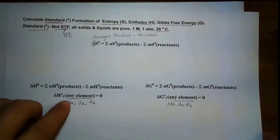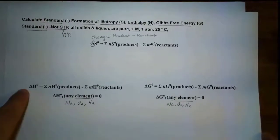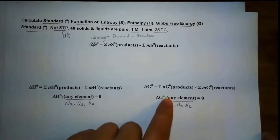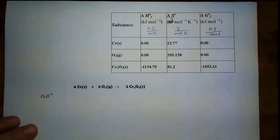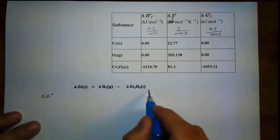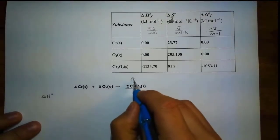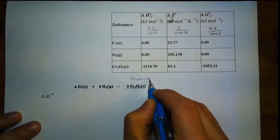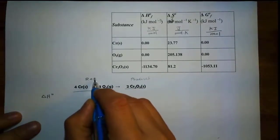Except for any pure element, delta H and delta G formation would be zero. So let's just work this problem together. It's always product minus reactant. So we look at this reaction here — here's the product, and this is relative to the reactant. Keep that in mind.